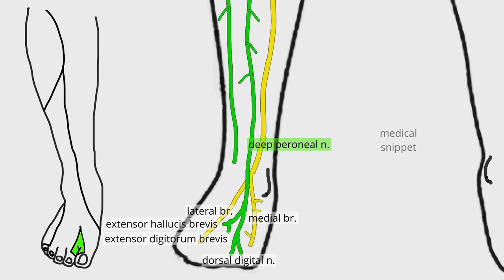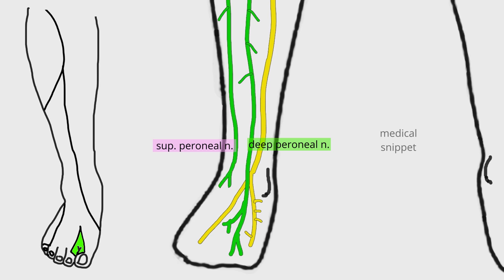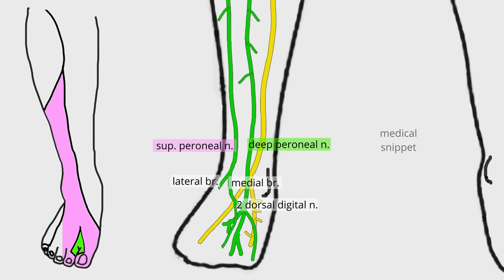The superficial peroneal nerve is divided into medial and lateral branches. The medial branch divides into two dorsal digital nerves: one for the medial side of the big toe and the other for the adjoining sides of the second and third toes. The lateral branch divides into two dorsal digital nerves for the adjoining sides of the third and fourth, and fourth and fifth toes.